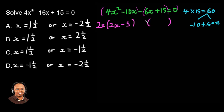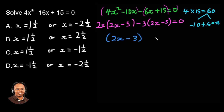Then for the remaining two terms, what is common? The common factor is minus 3. So what are we going to have in the bracket? We have 2x minus 5 equals 0. So the first common factor is 2x minus 3, and the second factor is 2x minus 5 equals 0.